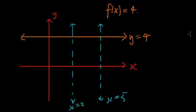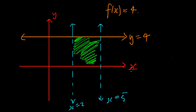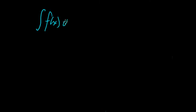The easiest way is to do a worked example through a relatively basic question. We have the line y equals 4, so the function f(x) is equal to 4. We want to calculate the area between x=2 and x=5, under the graph y=4 and above the x-axis. What we can do is find the definite integral — we integrate the function f(x) dx.